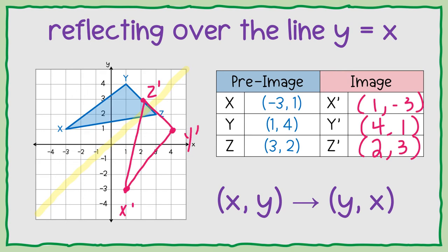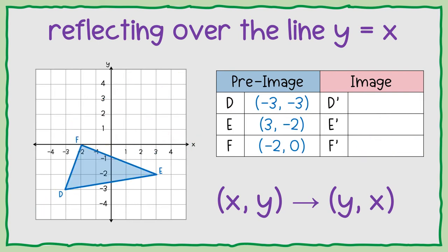Okay, and that's what our figure looks like reflected over the y equals x line. Let's do another example. So same thing, I want to reflect over the line y equals x. So that's the diagonal line that goes up.